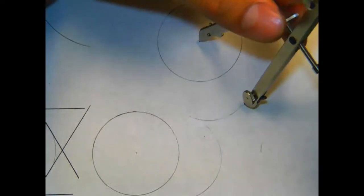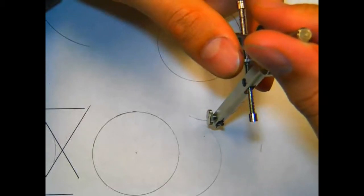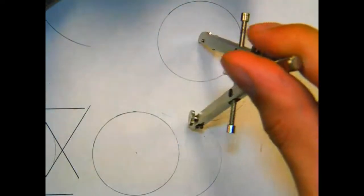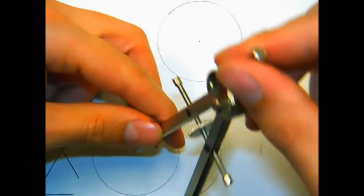And then we'll extend our compass out from the center point of one arc until we get to the high point of the arc that we drew for that circle, and then swing an arc at that high point and do the same thing for the other circle.